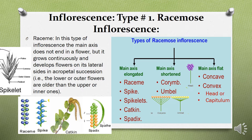The fifth subtype where the main axis is elongated is spadix. Spadix is a type of inflorescence in which sessile, non-stalked flowers develop on the elongated main axis, and the whole inflorescence is enclosed in a bracket-like structure known as spathe. The spathe is a leaf-like structure, just like a blade of a leaf, enclosing the entire inflorescence.